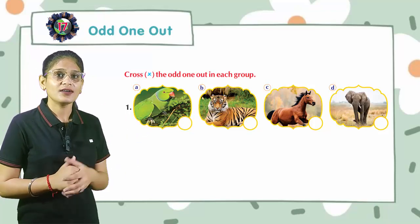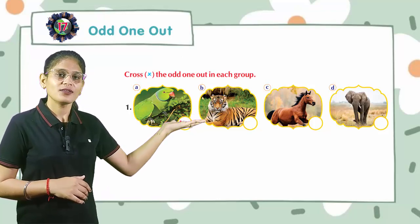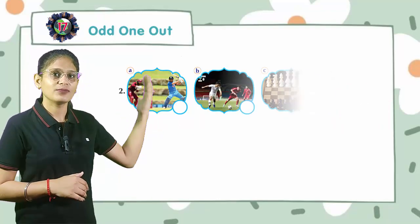Look at the first. Here, three are wild animals. One is parrot. So parrot is different. So cross out.